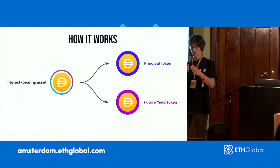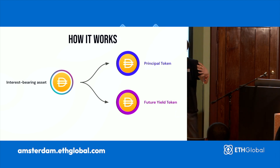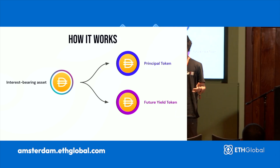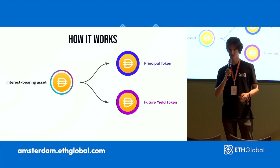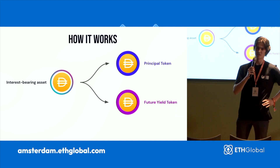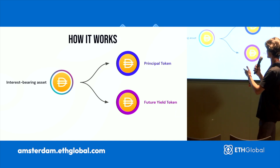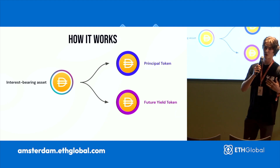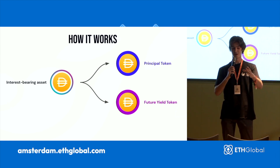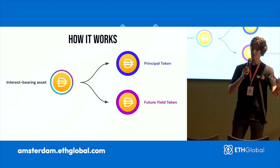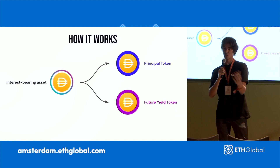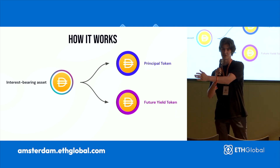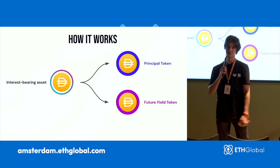The future yield token is going to represent all the yield generated by the initial deposit. Let's say you have some funds on Aave, farming at five percent on USDC — that's pretty reasonable. If you deposit $100 on Aave, you're going to get a PT that represents your $100, plus the FYT that is going to represent all the yield generated by this $100. So at the end of the year, if you're getting 5%, this FYT is going to be worth $5. That's how it works.